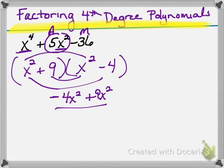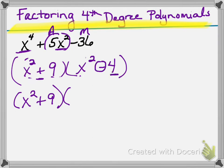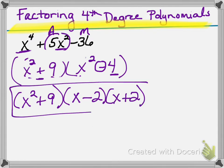Before we say we're done factoring, we have to look. The only way you could keep going is if one of your factors is the difference of two squares. This first one is not because it's a sum, so it's going to be x squared plus 9. The second one is a difference, and these are both perfect squares — 4 is a perfect square. So this is going to factor into x minus 2 and x plus 2. This is the fourth degree trinomial factored completely, and that's our direction for today.